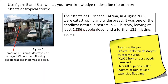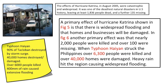Let's see what that response will look like. A primary effect of Hurricane Katrina shown in figure 5 is that there is widespread flooding and that homes and businesses will be damaged. In figure 6, a primary effect was that nearly 2,000 people were killed and over 100 were missing. When Typhoon Haiyan struck the Philippines, over 6,000 people were killed and over 40,000 homes were damaged. Heavy rain hit the region causing widespread flooding. In this response, I've clearly referred to figures 5 and 6, shown my own knowledge by talking about Typhoon Haiyan with specific statistics, and tried to mention 'primary effect' several times, which is what the question was asking me to consider.